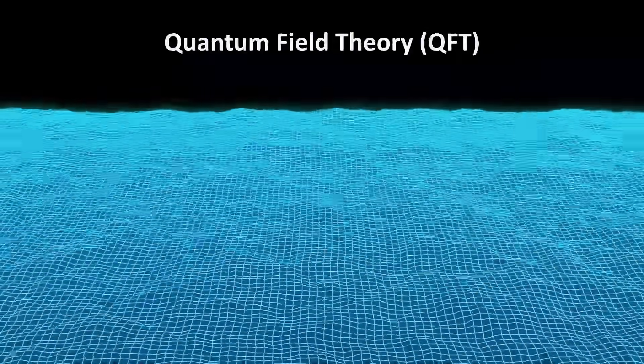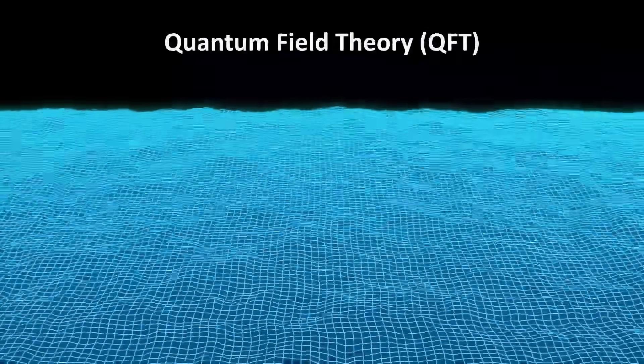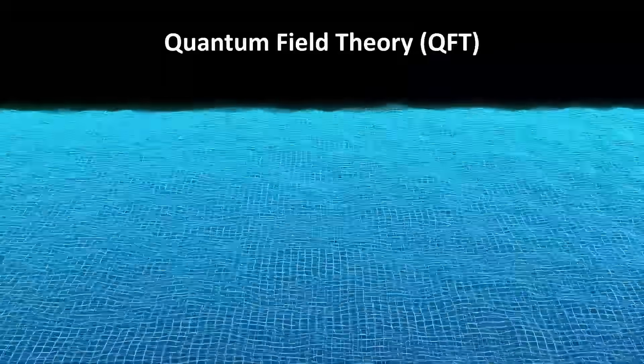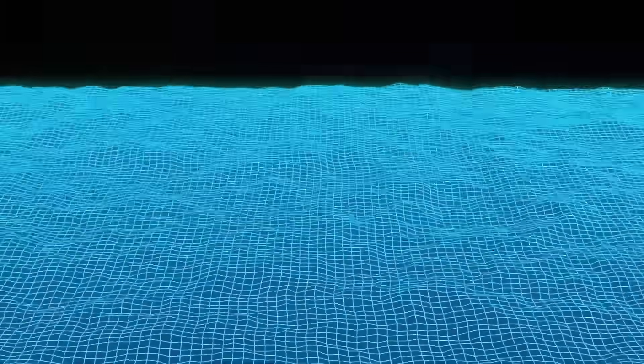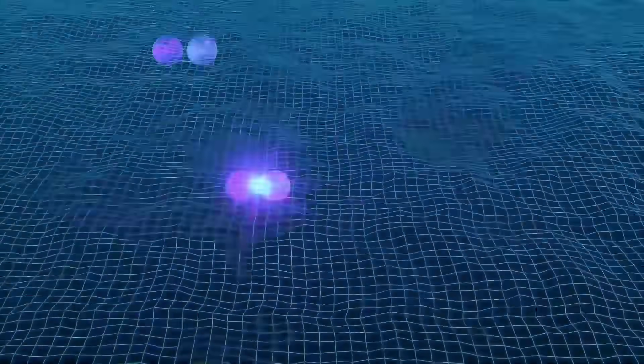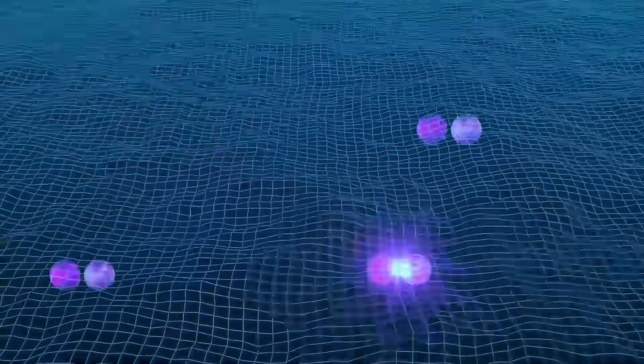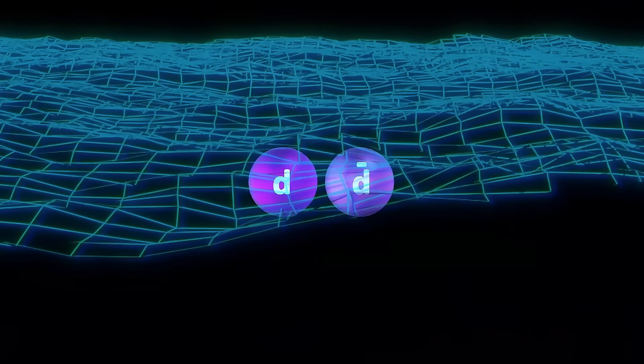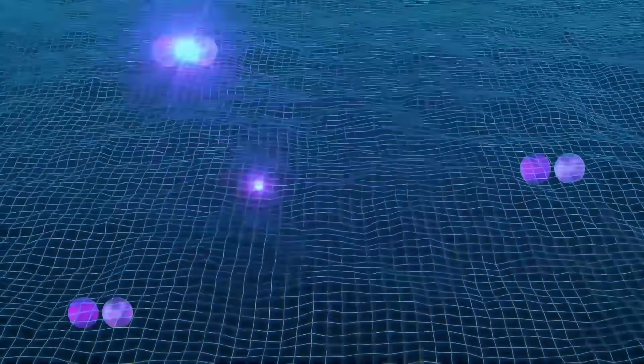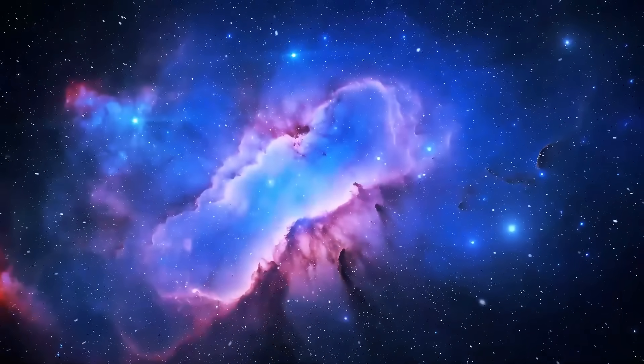The basic idea of virtual particles comes from quantum field theory, which tells us that empty space, which is space with no particles or radiation, is not actually empty. Instead, it's teeming with a sea of virtual particles. These are fluctuations in the field where particles and antiparticles spontaneously appear and disappear, annihilating each other constantly.